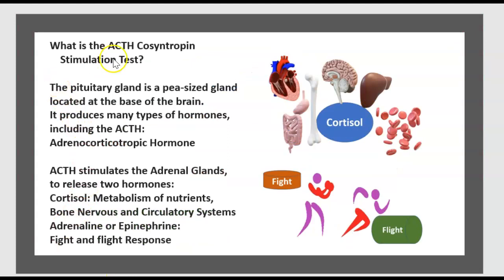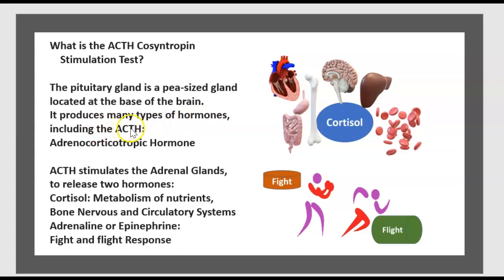What is the ACTH cosyntropin stimulation test? The pituitary is a pea-sized gland located at the base of the brain. It produces many types of hormones, including ACTH — adrenocorticotropic hormone.